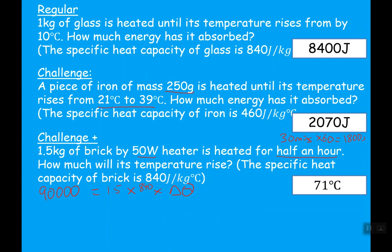If we then simplify this, 1.5 times 840 times change in temperature is 90,000. Do 1.5 times 840, that gives you 1260 times change in temperature is 90,000. To work it out, divide that by 1260. That will cancel out. Change in temperature is 90,000 divided by that, which is 71.4. We're probably looking for 2 sig figs here because that is the lowest number given in the data, 71 degrees.